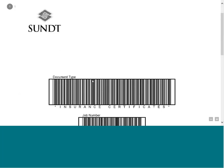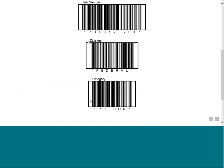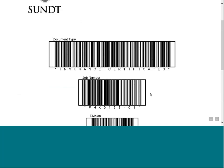Another automated example is from a large construction company with multiple active construction sites across the U.S. One of their challenges was managing certificates of insurance for subcontractors. Their cover sheet has information about the document type in a barcode, the job number, the division, and the category. As documents come in at the construction site, they slap a cover sheet on the document, fax or scan it to headquarters, and it gets auto-processed and posted into the system with all the subcontractor data.